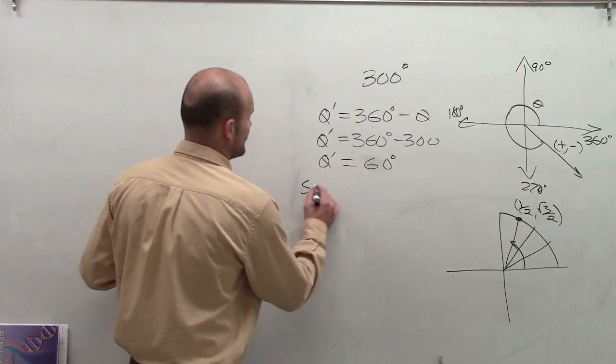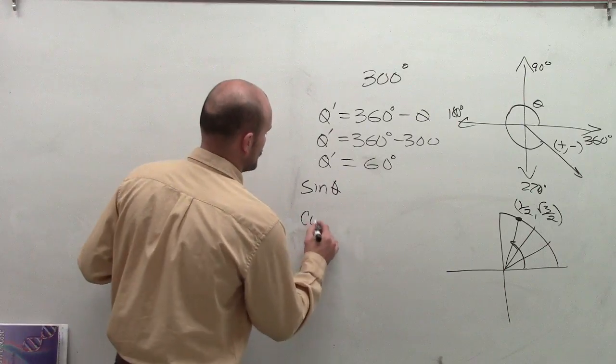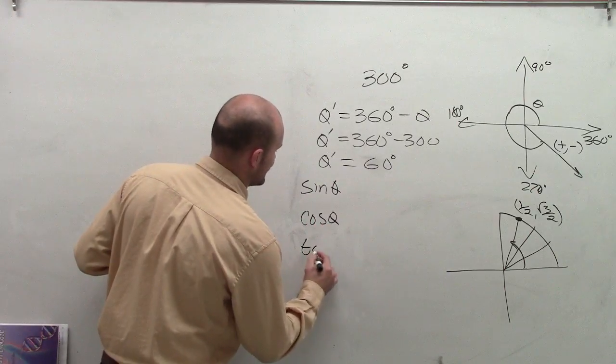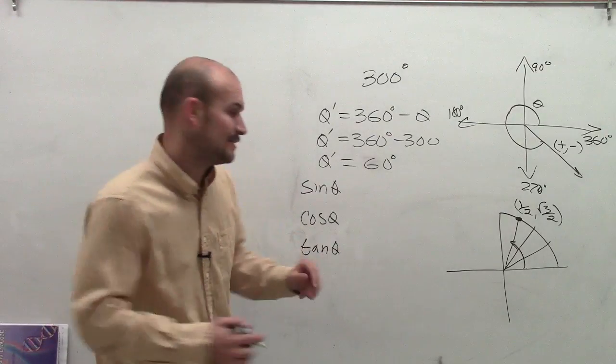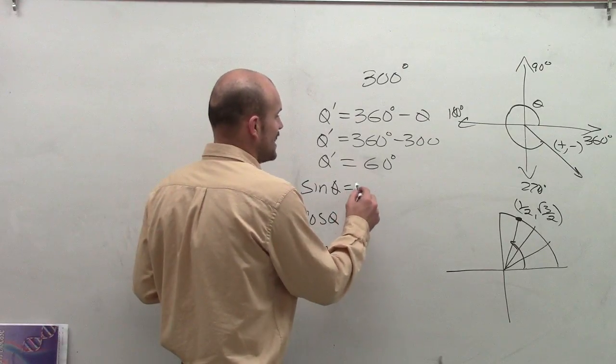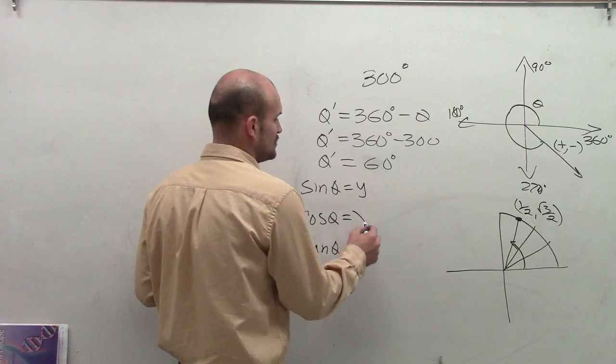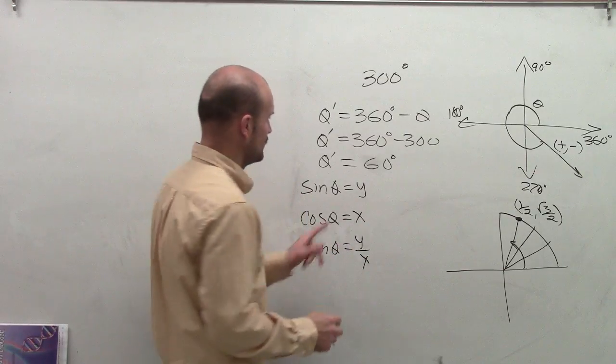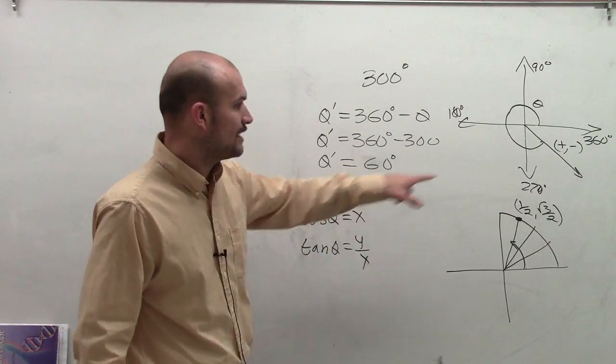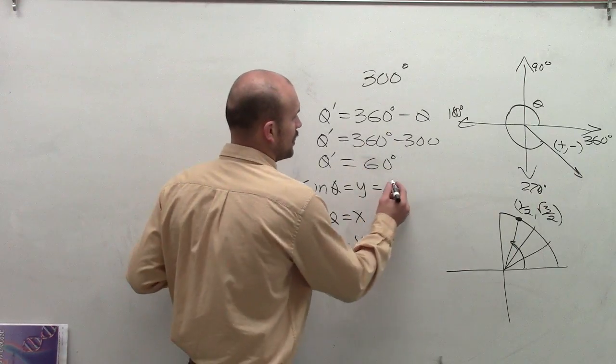So therefore, to find the value of sine, cosine, and tangent, what I need to do is remember how do sine, cosine, and tangent represent a point on the unit circle? Well, remember the sine represents the y-coordinate, cosine the x-coordinate, and tangent the y over x-coordinate. So in this case, we have sine y-coordinate, which is the square root of 3 over 2.